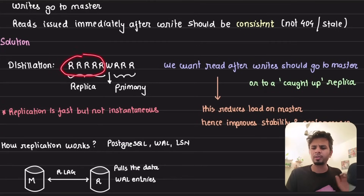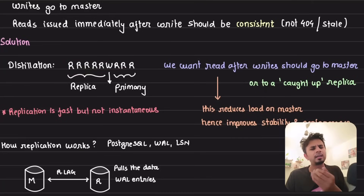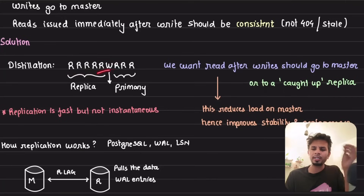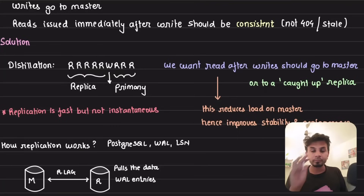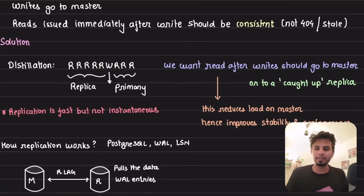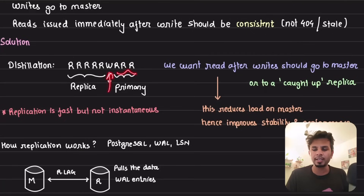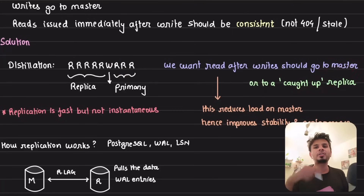A bunch of reads can go to read replica — not a problem. Imagine all reads and write operations are happening for the same key, like a Jira issue or a Bitbucket file ID. A lot of reads can go to replica, but as soon as a write has happened, all subsequent reads should be consistent — meaning they should get the freshly written data. So all reads after a write should go to either the primary or a replica that is caught up.